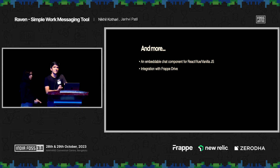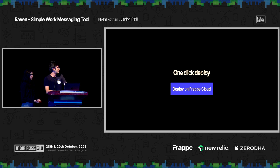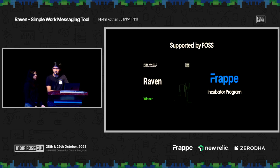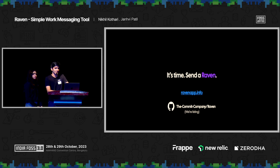Another very requested feature is an embeddable chat component. For example, if you're on Frappe Desk and a support ticket comes in and you want to chat with your team, instead of going to a separate Raven interface, we want to build a common React or Vue.js component you can embed in your application — it can stick to the bottom right corner, or you can customize where it appears. If you want to try out Raven, you can deploy it on Frappe Cloud — it's available on private benches. You can also self-host it. Raven is supported by the FOSS community; we started at FOSS Hack and were also lucky enough to get into the Frappe Incubator program.